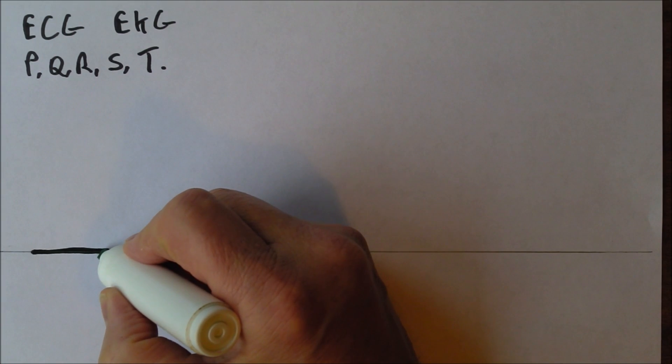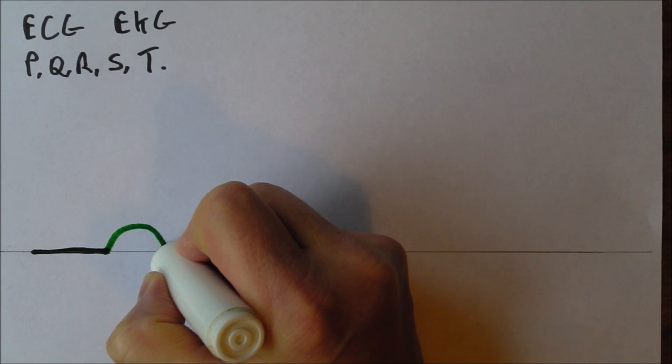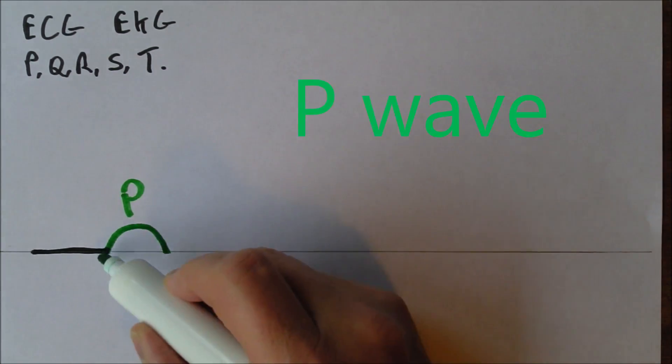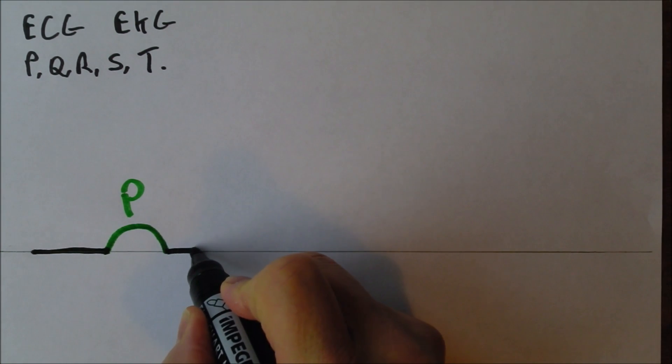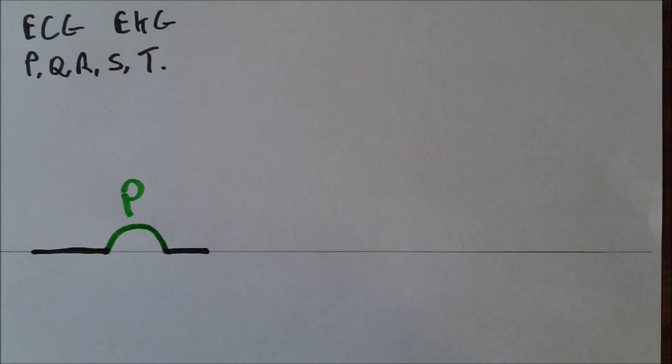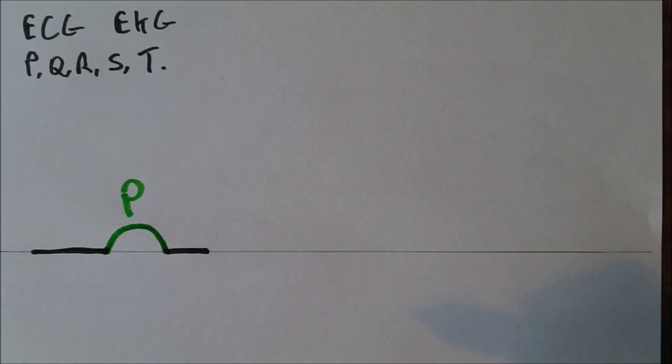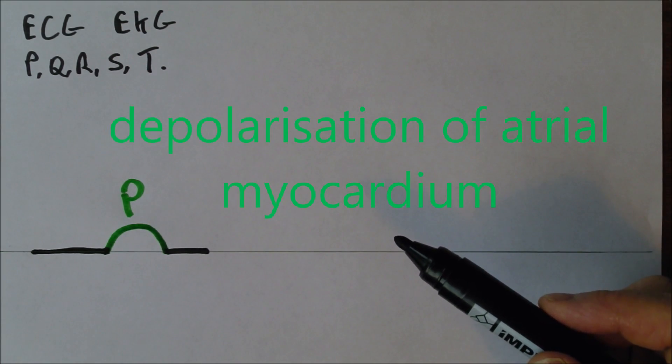But then we get electrical activity in the form of the P wave. Now the P wave goes up and it goes down. So all of that in green is the P wave. The bit that goes up and the bit that goes down. And as we see it goes back down to the isoelectric line just here. Now what's happening here with the P wave is the P wave is caused by the depolarization of the atrial myocardium.